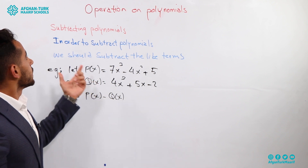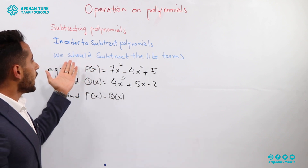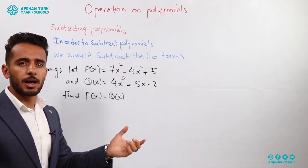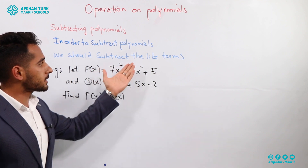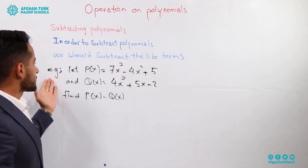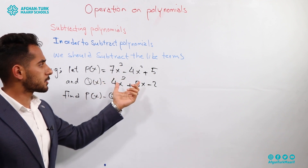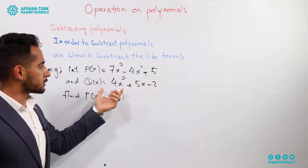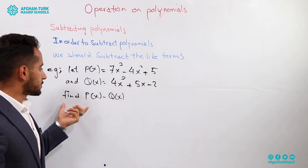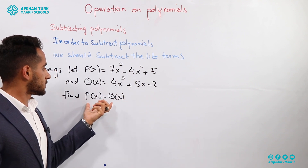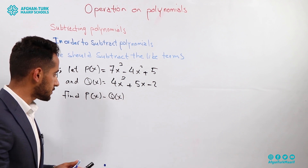The second operation is subtracting polynomials. In order to subtract two polynomials, we have to subtract the like terms, just as we did in the addition of polynomials. For example, let P(x) equal 7x cubed minus 4x squared plus 5, and Q(x) equal 4x cubed plus 5x minus 2, and we are asked to calculate the subtraction of these two polynomials.